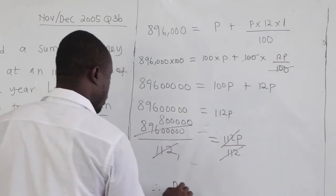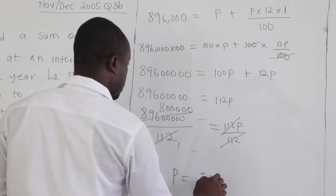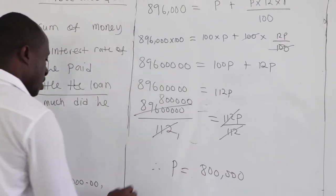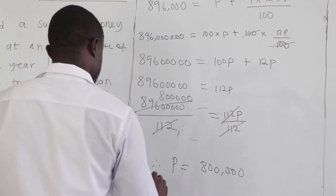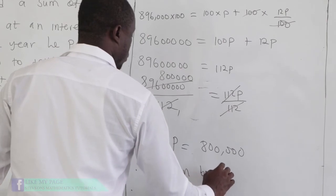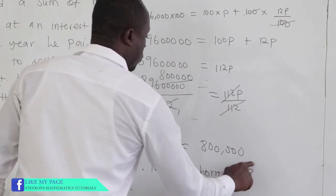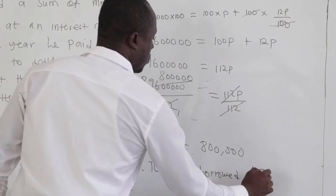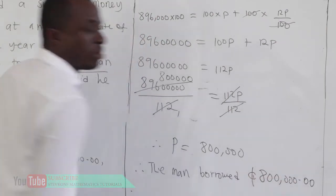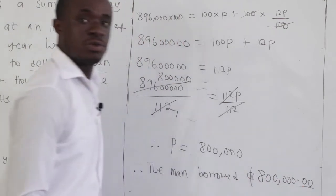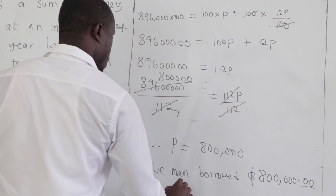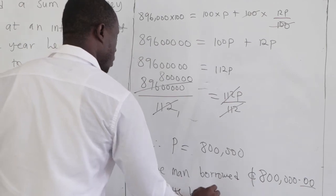Clearly, our principal is 800,000. The question says how much did he borrow from the bank. Therefore, the man borrowed $800,000. Because it's currency, don't forget your two decimal places.